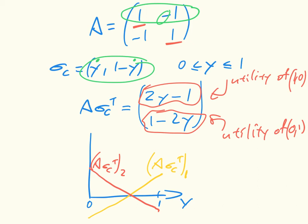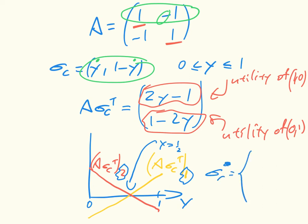Now we can identify the best responses for all values of y. At y equals one-half the two lines intersect. As long as y is less than one-half, we should be on the red line because it's above the yellow line, so the best response is to play the second row. If y is greater than one-half, we want to be on the yellow line, so the best response is to play the first row. We write that σ_r* equals (1, 0) if y > 1/2, equals (0, 1) if y < 1/2, and if y equals 1/2 both strategies are a best response — we're indifferent. We can reproduce this for the column player and see which pairs of strategies are best responses to each other.